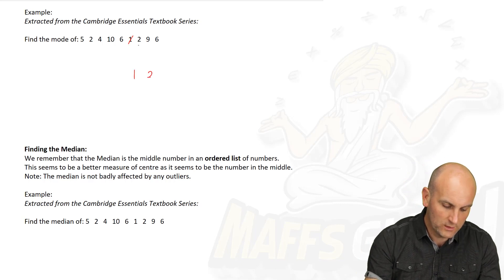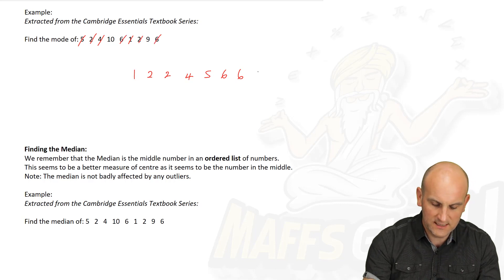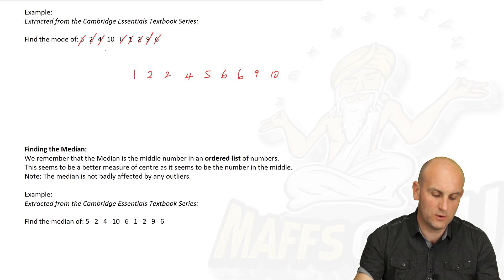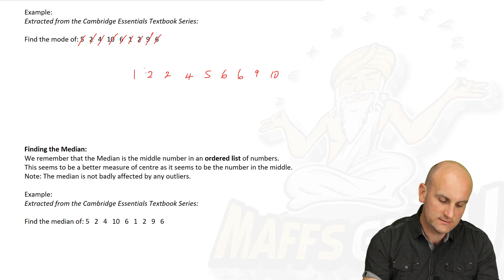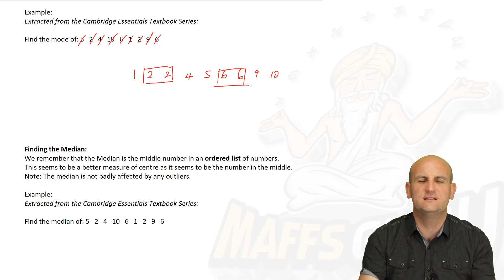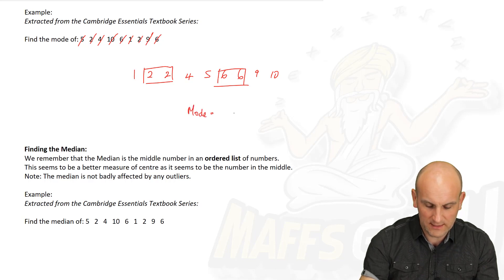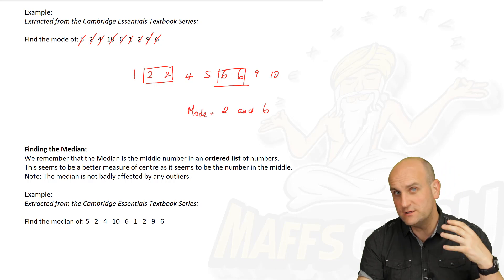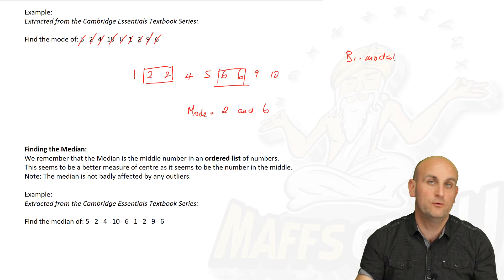When we're doing the mode, we don't really have to put things in order, but I like to. So I've got 1, 2, 2, 4, 5, 6, 6, 9 and 10. We're looking for the most common data item — the one there's most of. Notice I've got two twos and two sixes. So before we go any further, this data doesn't just have one mode — it has two modes. The mode would be written as 2 and 6. I would describe this data as bi-modal — 'bi' for two, meaning two modes.